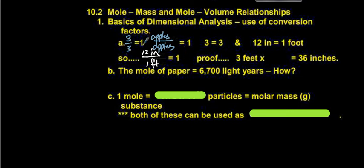So we know that if we take anything that equals something else and divide one by the other, it equals 1. That's the multiplicative identity property.